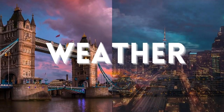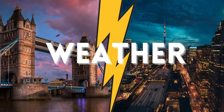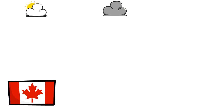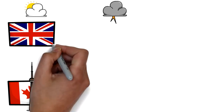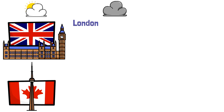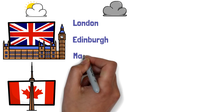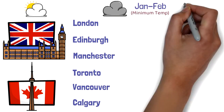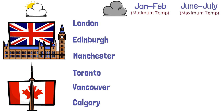Now let's discuss the weather, because Canada is famous for its harsh winter climate. I've listed down three cities from each country — from UK: London, Edinburgh, and Manchester; from Canada: Toronto, Vancouver, and Calgary. We'll look at the minimum temperatures in January and February, and the maximum temperatures in June and July, to understand both winter and summer weather.